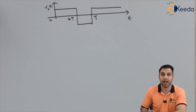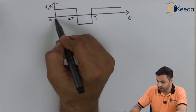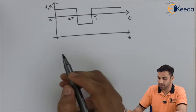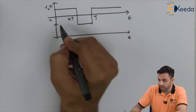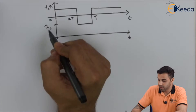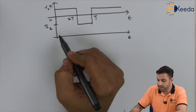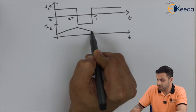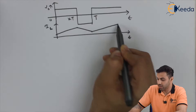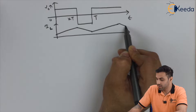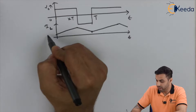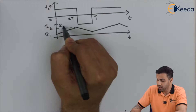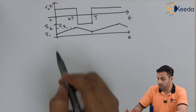Extending this graph to show the inductor current I_L: the inductor starts getting charged, then discharged, then charged again, and discharged again. The minimum value is I1 and the peak value of the inductor current is I2.